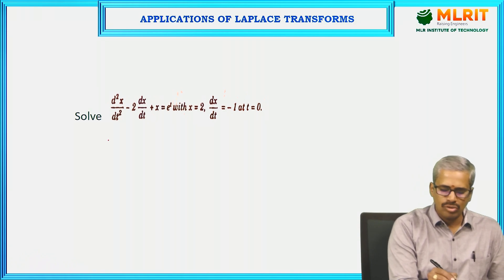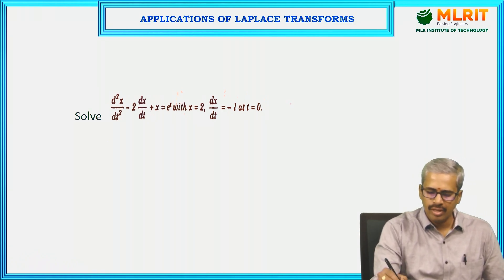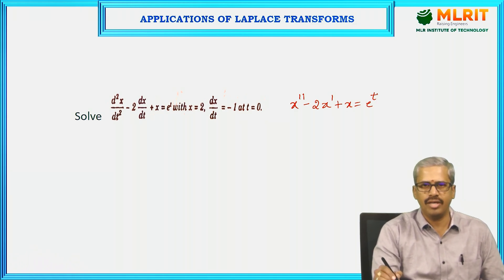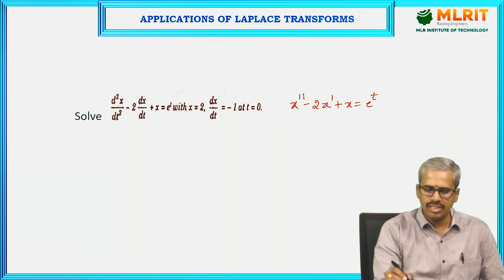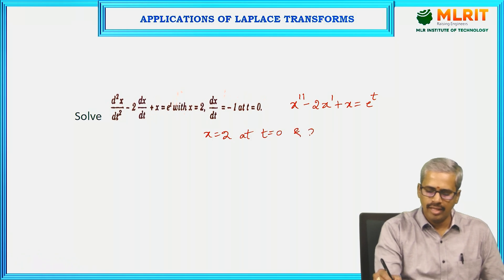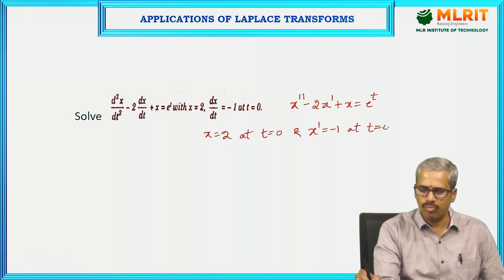Let us see how to solve this. The equation can be written as x'' minus 2x' plus x equals e^t. This is the given differential equation, with initial conditions x equals 2 at t equals 0 and x' equals minus 1 at t equals 0.